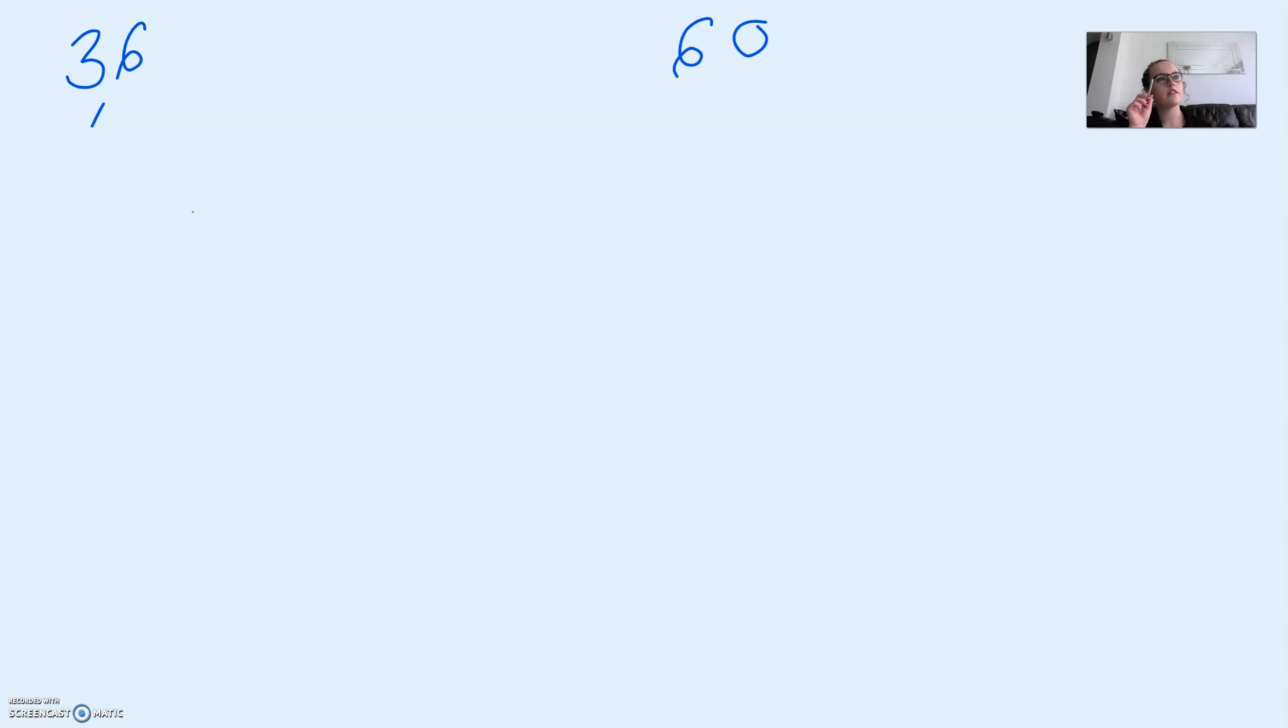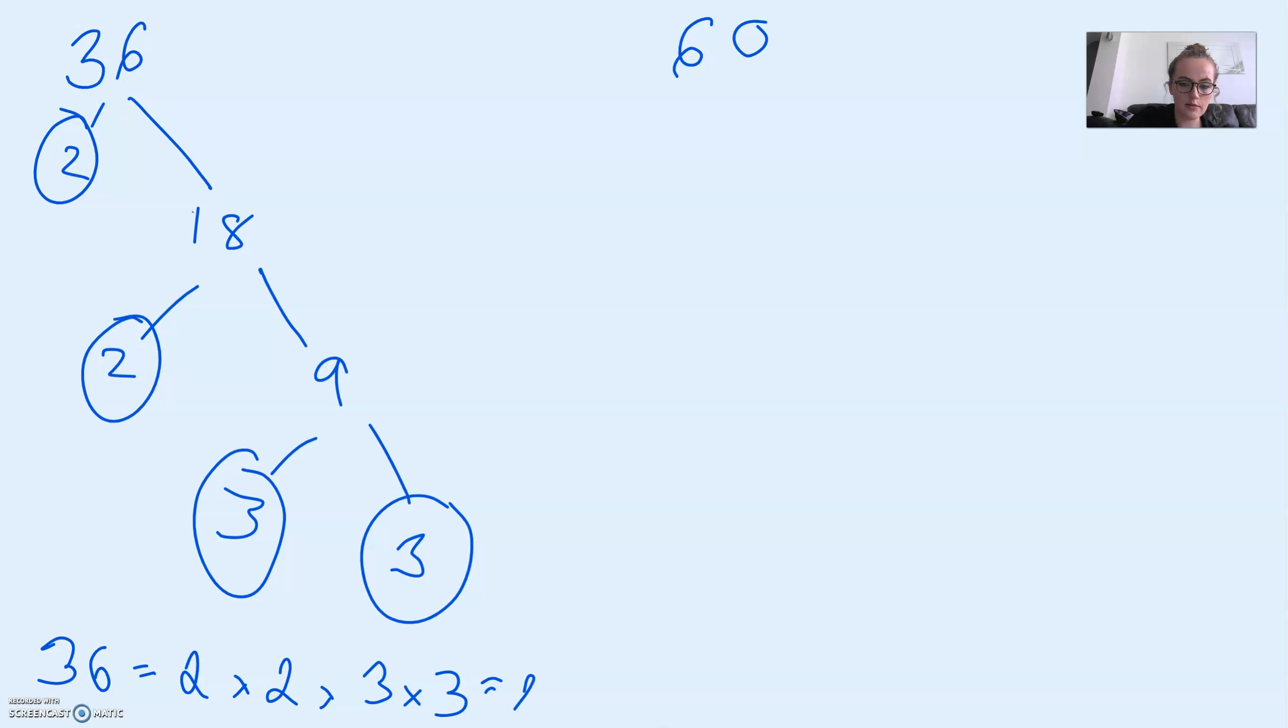We want a prime number that divides 36, so we could have 2. And then 36 divided by 2 will give 18. A prime number that divides 18, we should have 2 again. 18 divided by 2 is 9. A prime that divides 9, we could have 3. 9 divided by 3 is 3. And when we are left with a prime, that's when we stop. And then we can circle all of these. So that means 36 can be written as 2 times 2 times 3 times 3. We know 2 times 2 is the same as 2 squared, and 3 times 3 is the same as 3 squared. So therefore 36 is 2 squared times 3 squared.